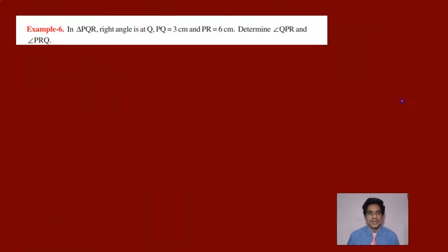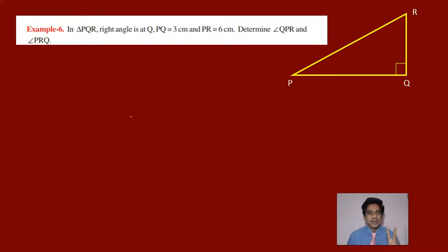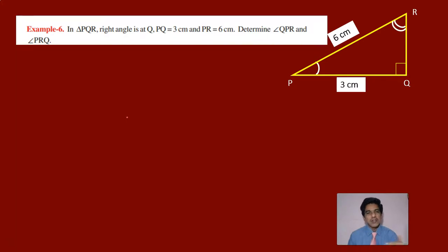Now let us move on to the next problem. In triangle PQR, right angle is at Q. PQ is 3 centimeters and QR is 6 centimeters. Determine angle QPR and angle PRQ. Here we have a right angle triangle and we are given two sides of the triangle. We have to find angle QPR and angle PRQ.